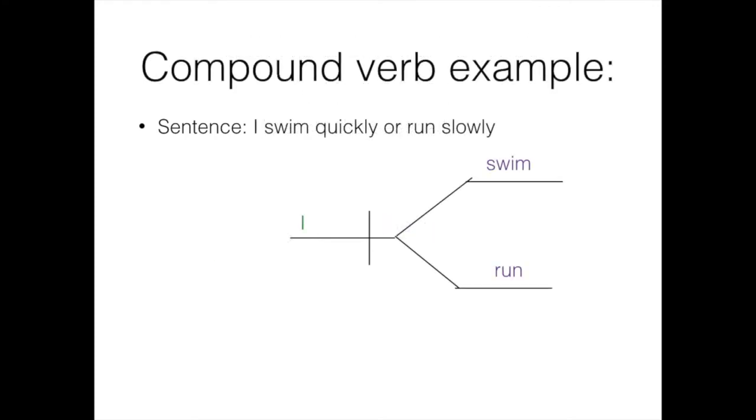A compound verb is diagrammed in much the same way. Alright, I'll use the sentence I swim quickly or run slowly. Like every other sentence, we'll start by diagramming the subject and verb, but in this case there are two verbs, swim and run.